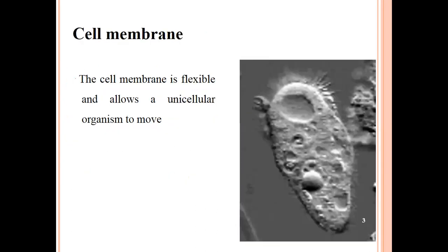The cell membrane is flexible and allows a unicellular organism to move. A unicellular organism moves with the help of the cell membrane, which leads the cell to move from one place to another. Here we have a diagram where we can see the cell membrane.